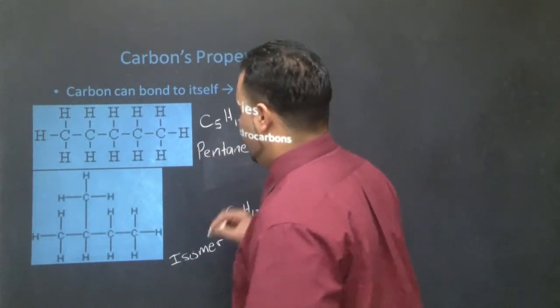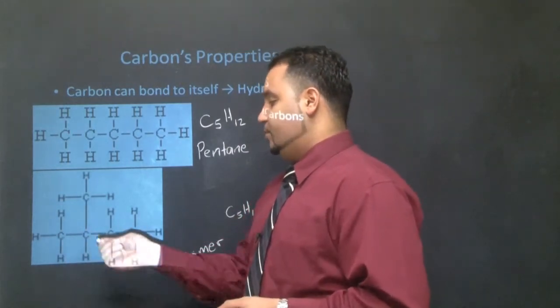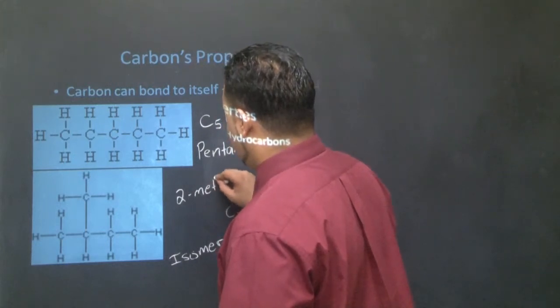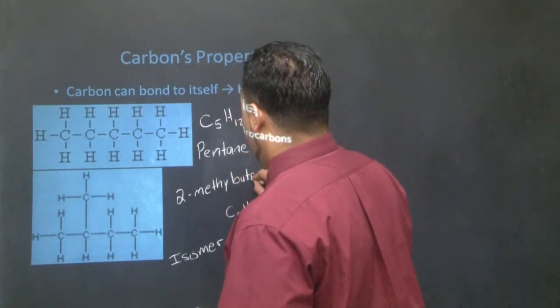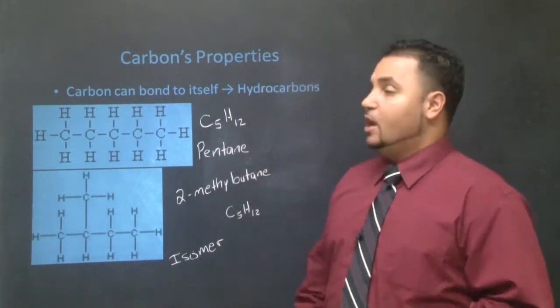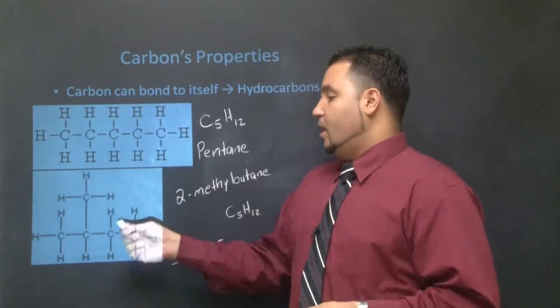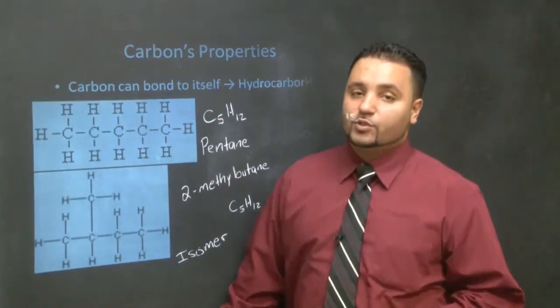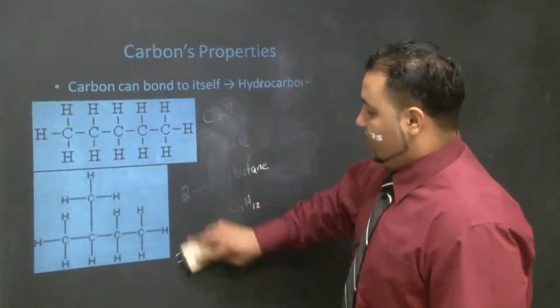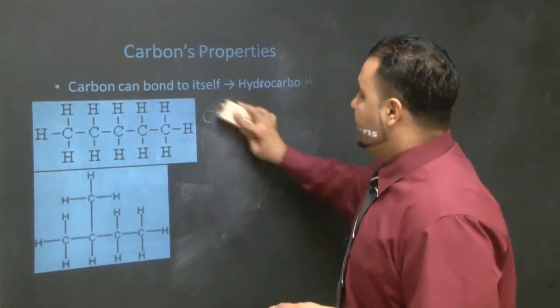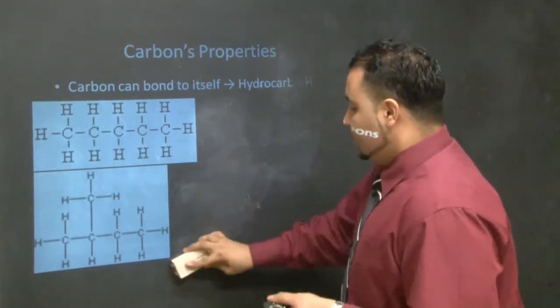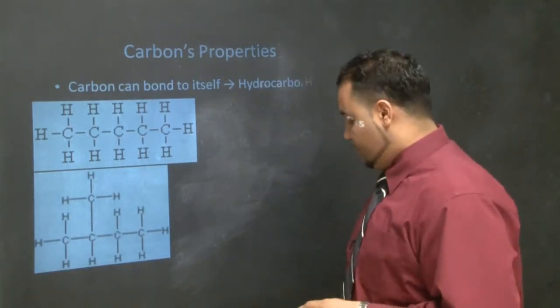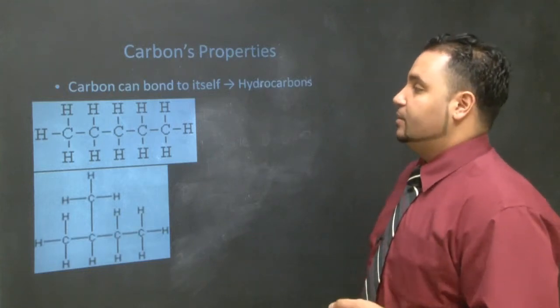So for example, this molecule over here is C5H12. Same thing goes for down here. This is also C5H12, except their names are different. This one we're going to call pentane, and this one down here, you number it one, two, three, four - that would be butane. This would be 2-methylbutane. But this is maybe a little too advanced in terms of chemistry. I just want to point out to you that they like to bond to each other and they create many of these isomers with one another.